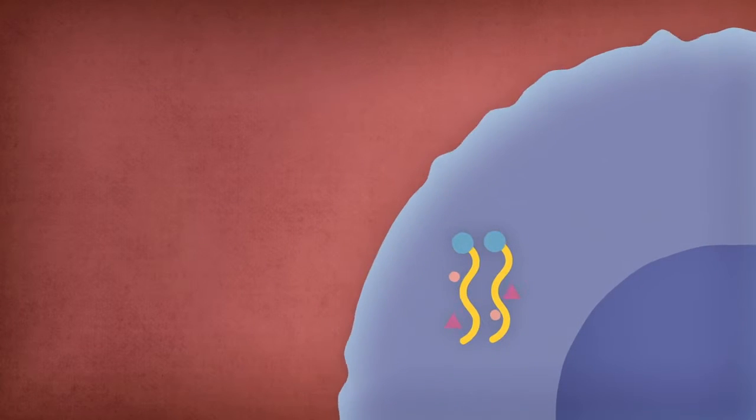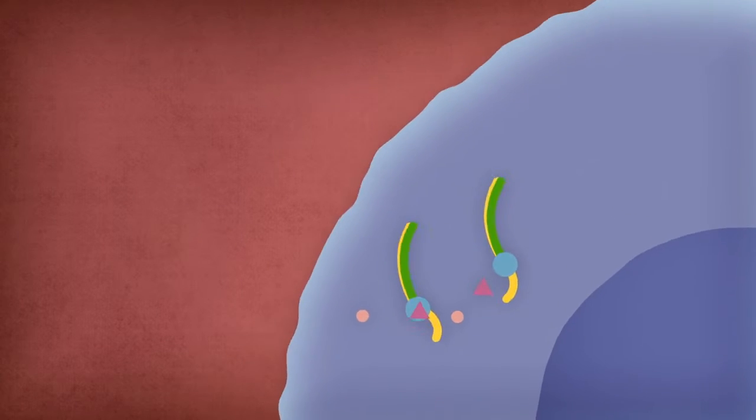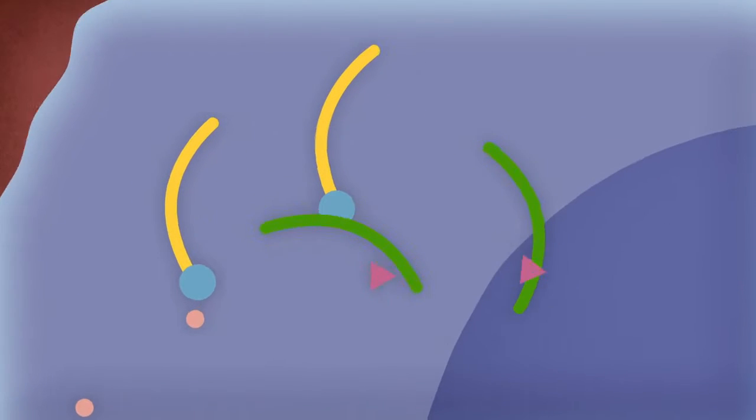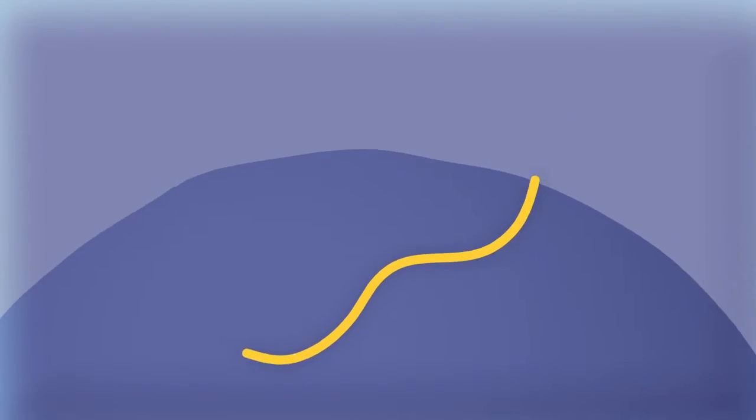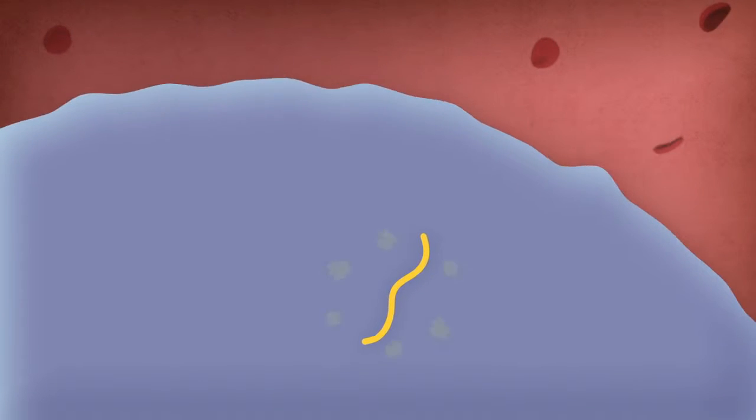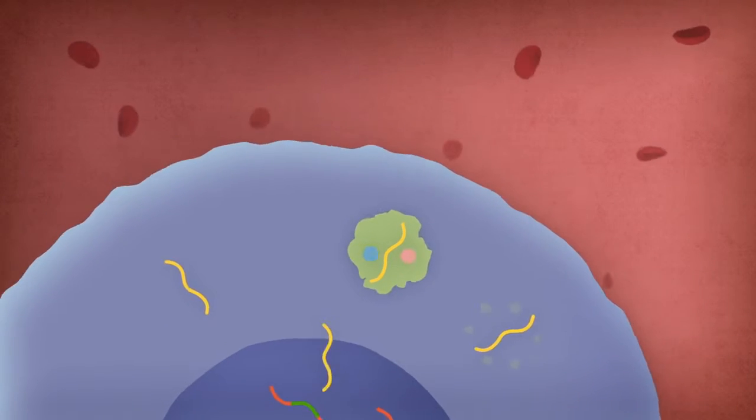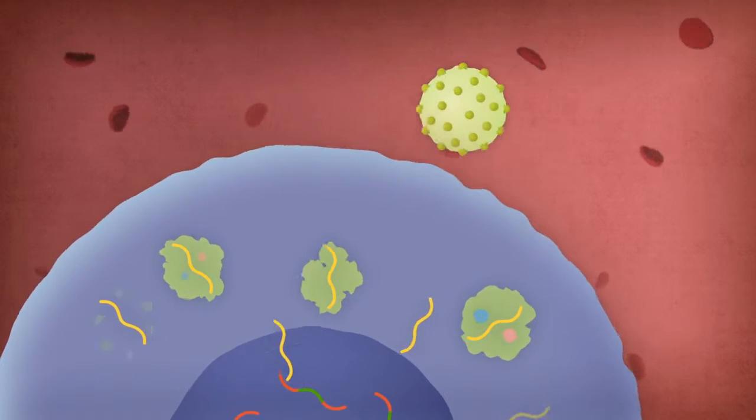Once inside a CD4 cell, the virus modifies the genetic material. This means that HIV adapts the human genes so that our cells make copies of the virus. In just one day, our cells make billions of copies of the virus.